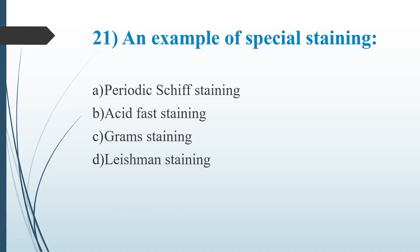Twenty-first question: An example of special staining. Option A, Periodic Acid Schiff staining. Option B, acid fast staining. Option C, gram staining. Option D, Leishman staining. Answer is Option A, Periodic Acid Schiff staining. Periodic Acid Schiff staining is used to detect polysaccharides such as glycogen and mucosubstances such as glycoproteins, glycolipids and mucins in tissues.